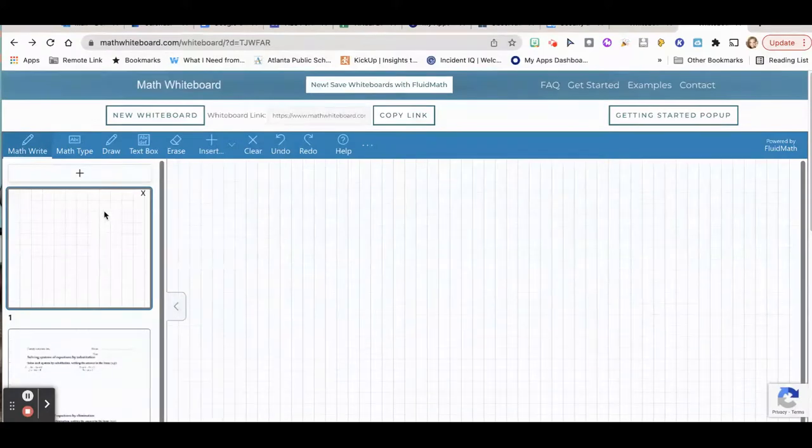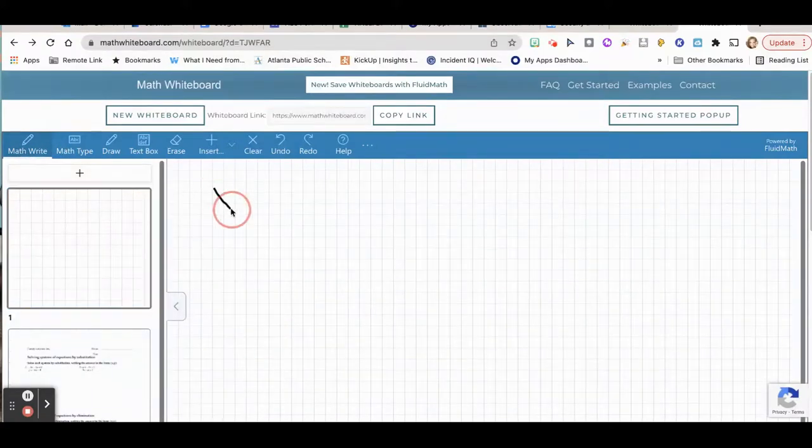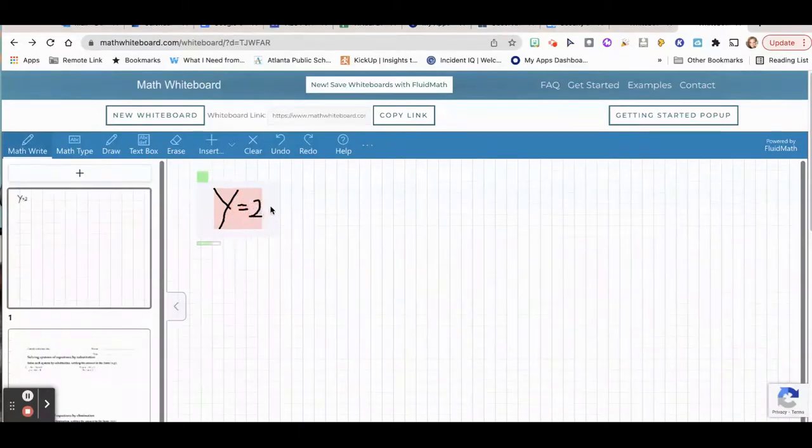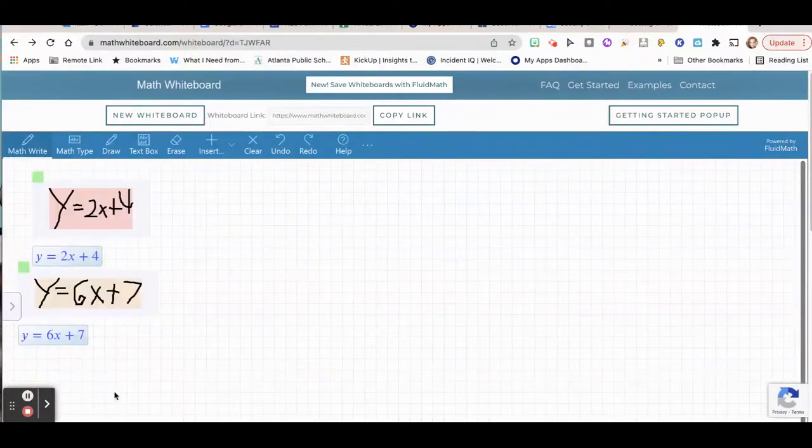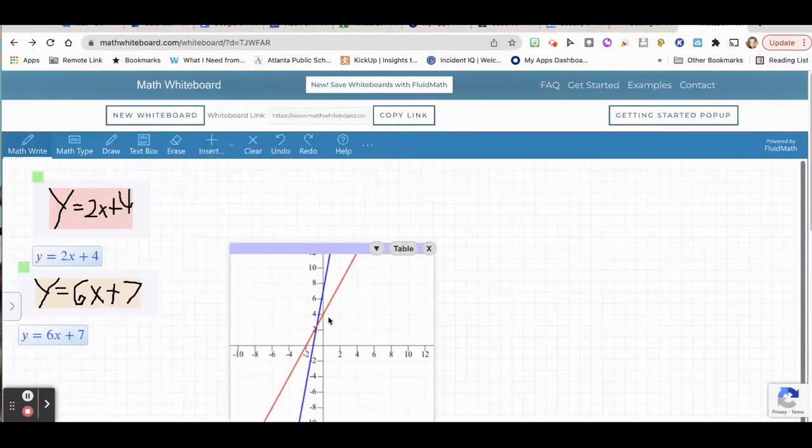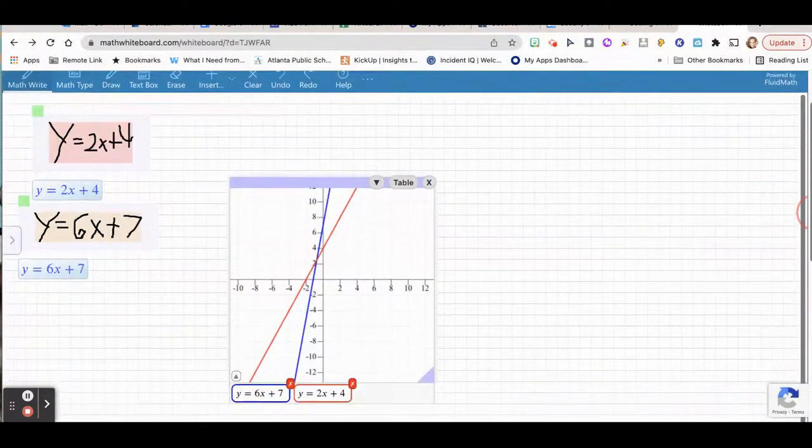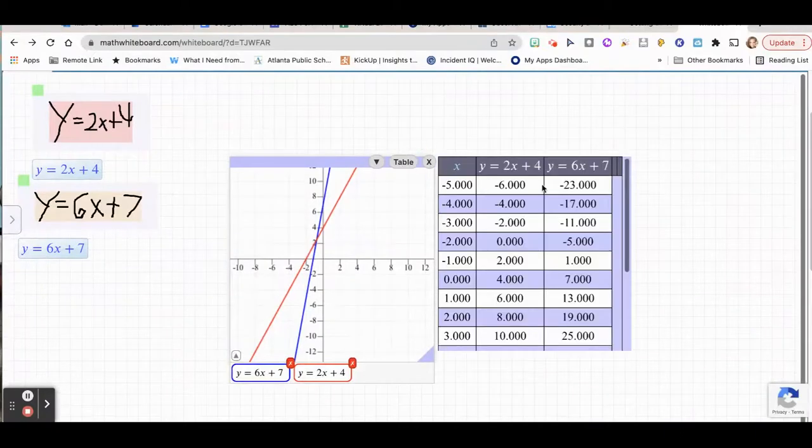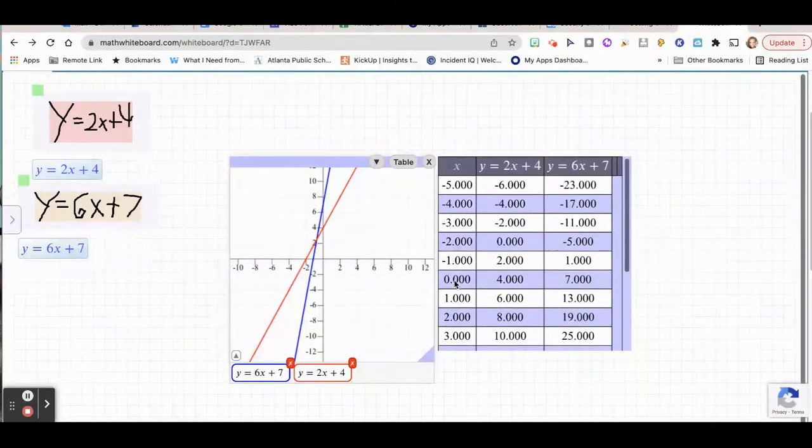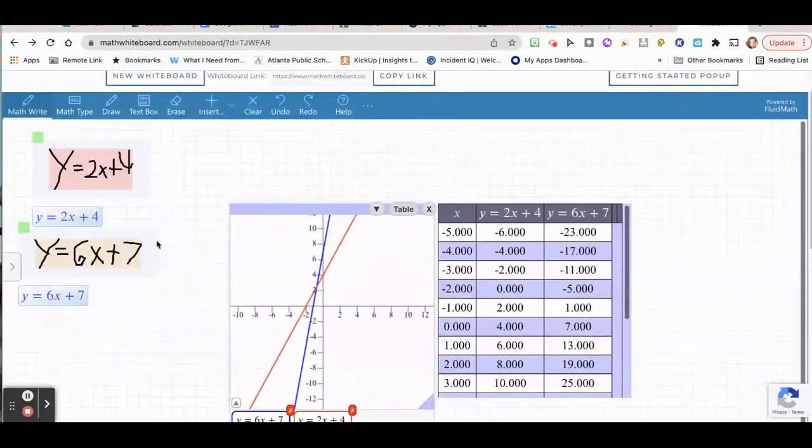If I had some equations. 2x plus 4. So I have my two equations and I'm going to do a swooping line through both of them and it's going to show them on a graph for me. I can click here and I can also get my function table so I could see what different x values would be if I plugged them in. So that's a pretty neat feature when you're introducing students to math whiteboard.